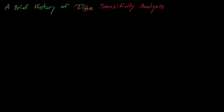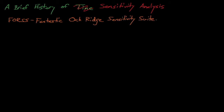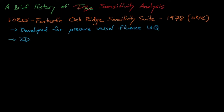The FORES code system was one of the first sensitivity analysis codes, and it was developed in 1978 by Oak Ridge National Laboratory to quantify uncertainty in pressure vessel fluids, which is one of the lifetime limiting parameters for light water reactors. Oak Ridge lovingly called this code FORES, which stands for the Oak Ridge Sensitivity Suite.